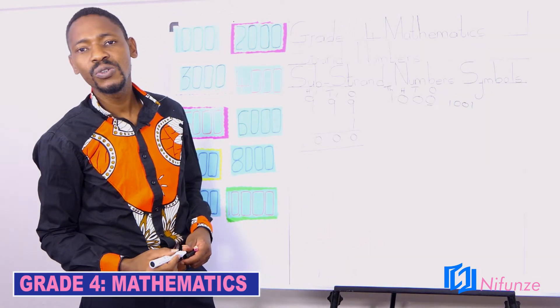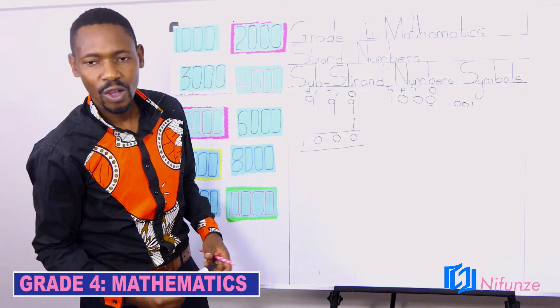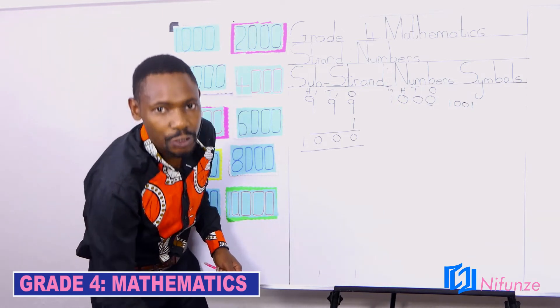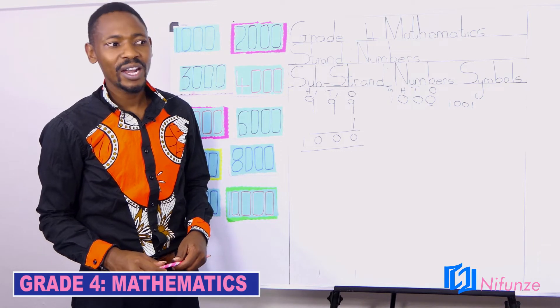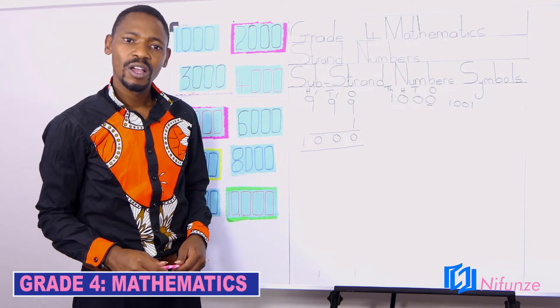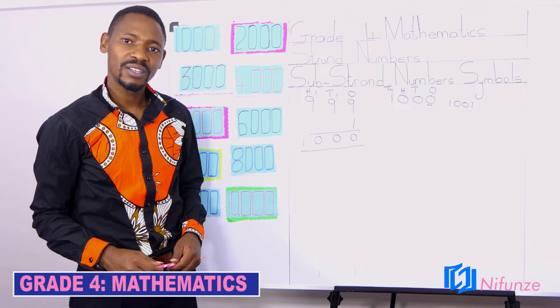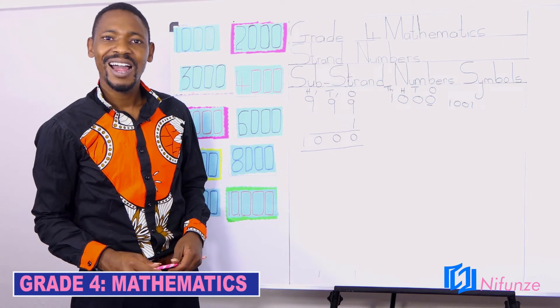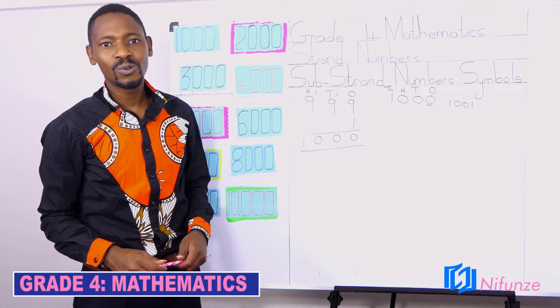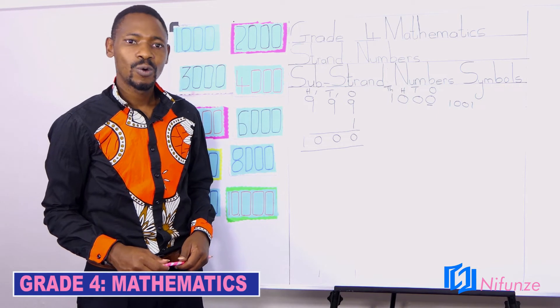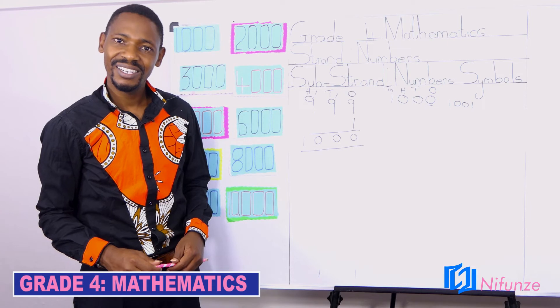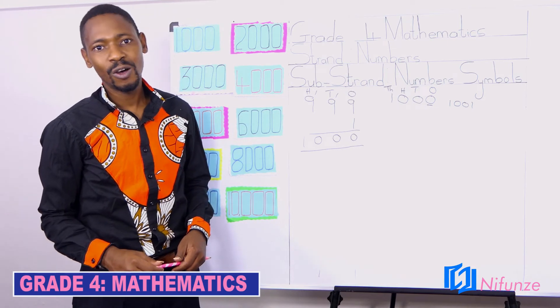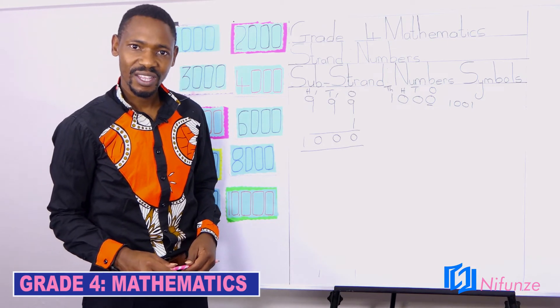Then you can continue counting. Counting 1,001, 1,002, 1,003, 1,004, 1,005, 1,006, 1,007, 1,008, 1,009, 1,010.